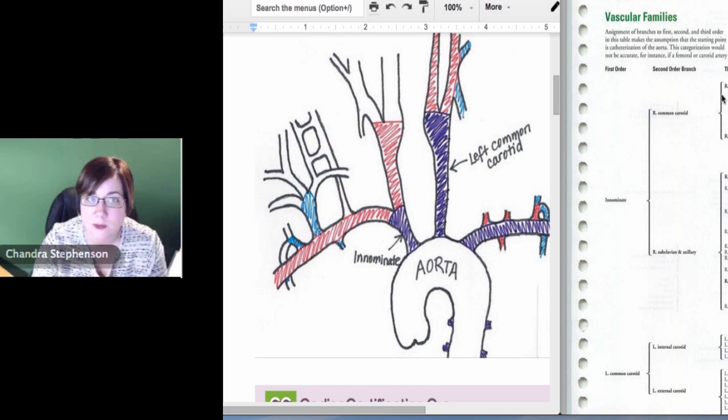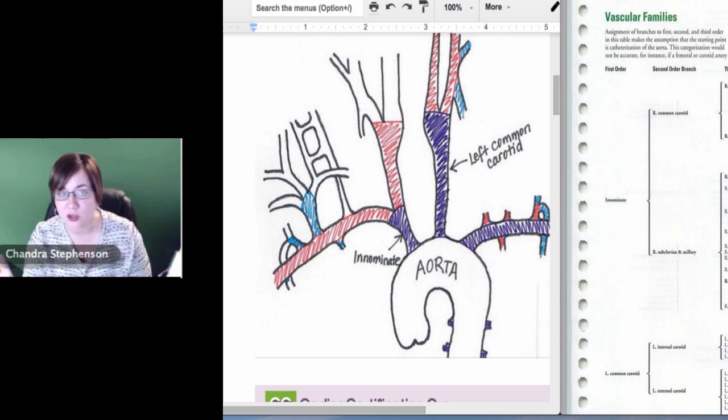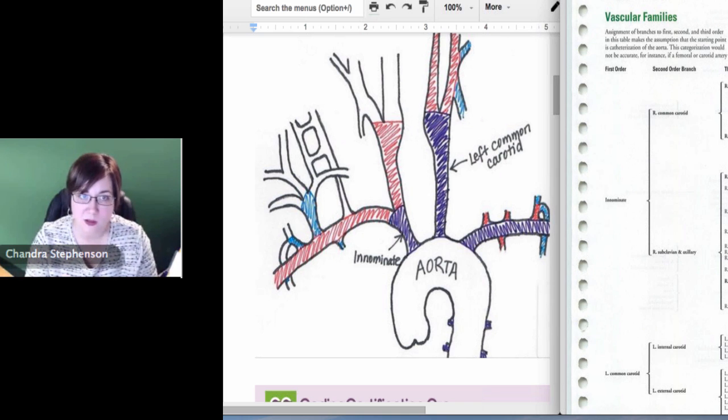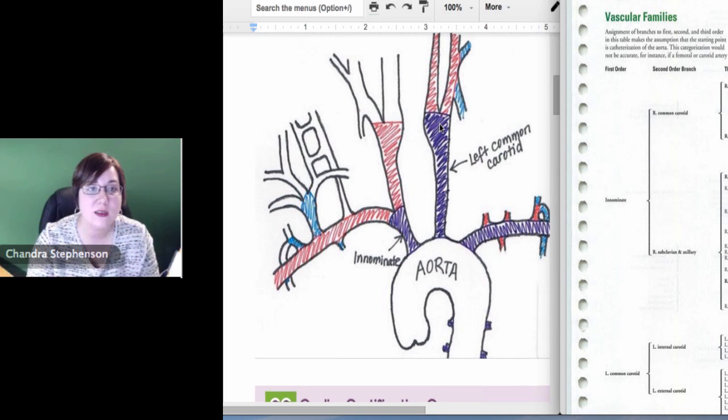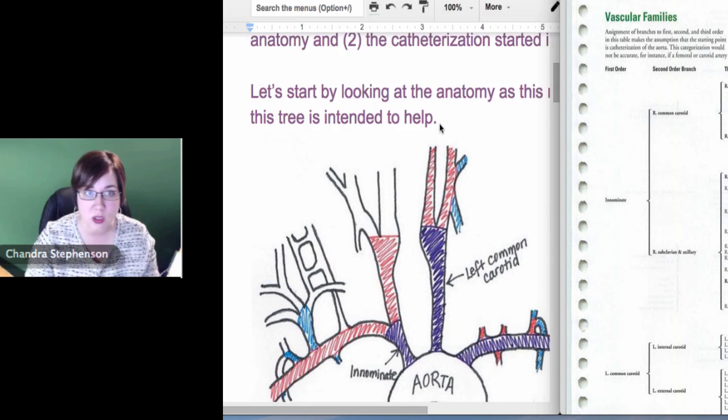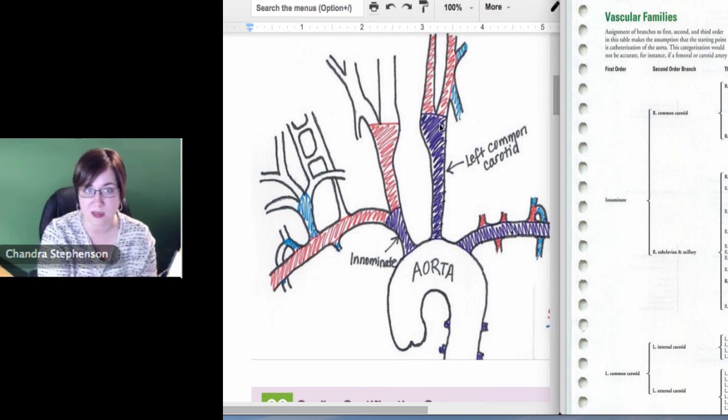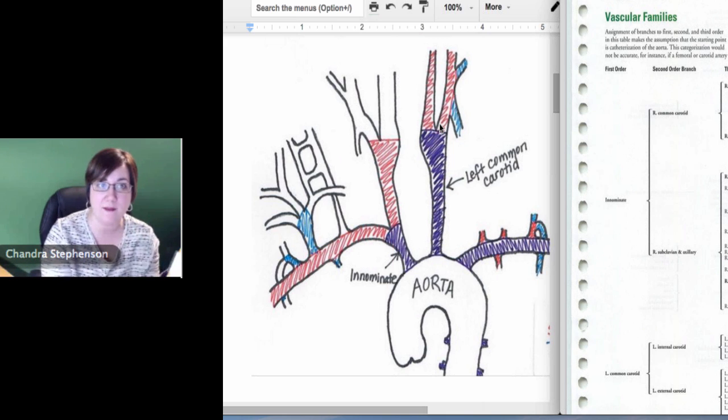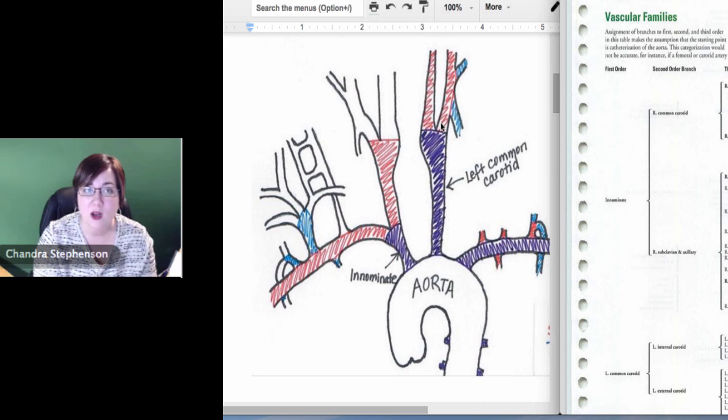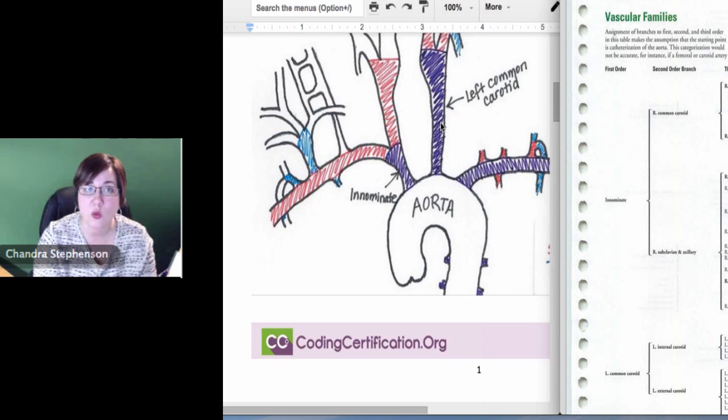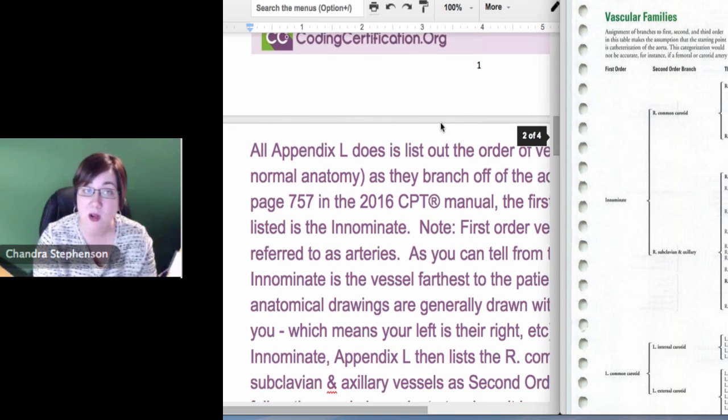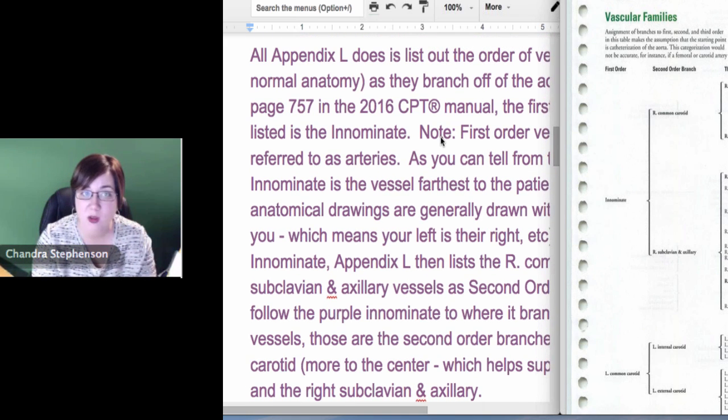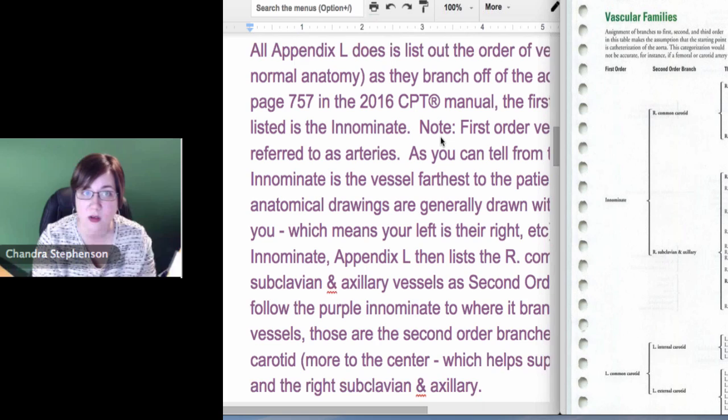So that when you look at those codes - now, that was a very large range that was given, 36200 through 36299. It actually doesn't apply to the whole range because the very first code, 36200, says insertion into the aorta. That's a non-selective cath. That means all we did was put the cath in the aorta. We never turned off the main road. This Appendix doesn't even come into play. It also doesn't come into play if you're looking at the renal arteries because in the middle of those 36200 codes, there are specific codes just for the renal arteries.